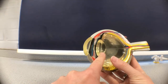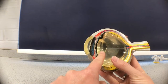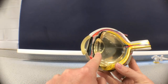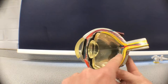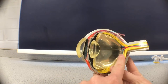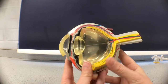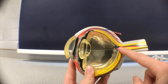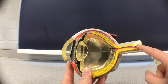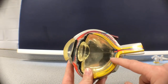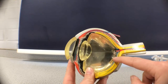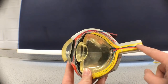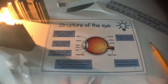The lens is just here and its shape can change to focus on objects that are near or far away - we'll talk more about that at Key Stage 4. The image forms on the retina at the back of the eye, and the information collected there is converted into an electrical signal that travels along the optic nerve to the brain. The image on the retina is actually upside down, and our brain turns it around and formats it so we can understand it.